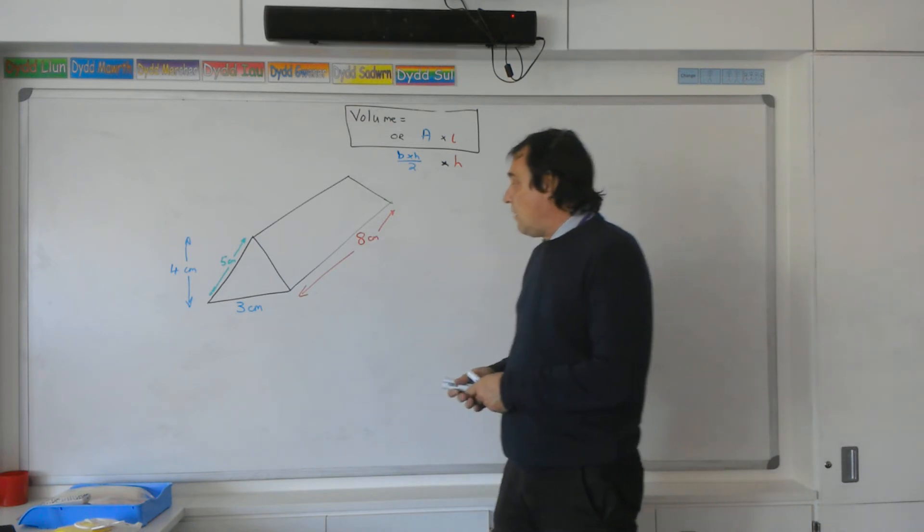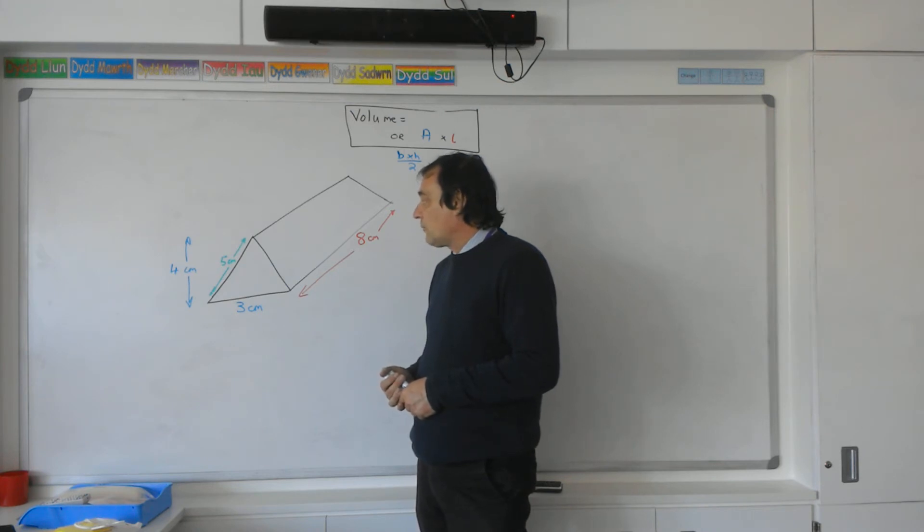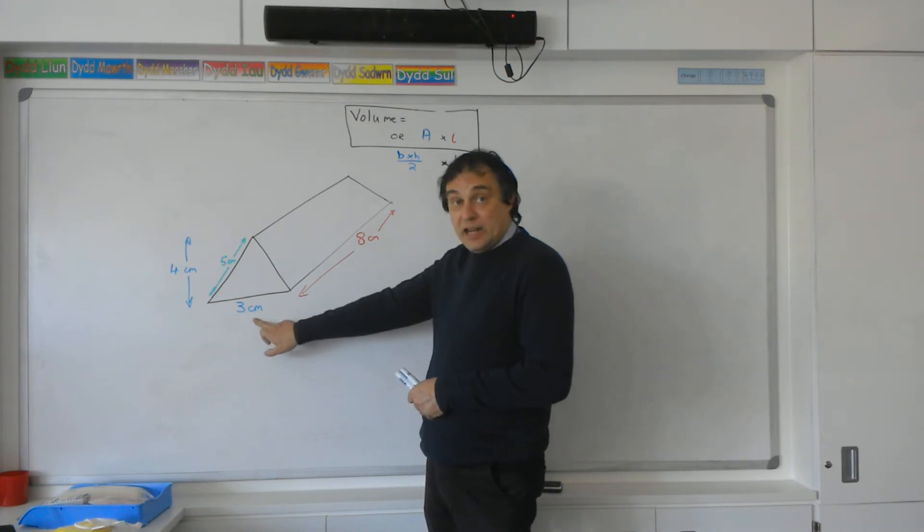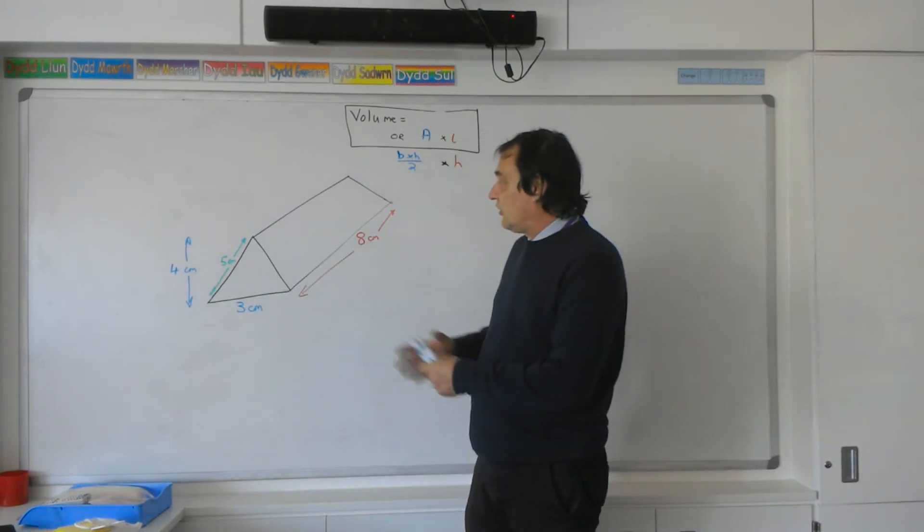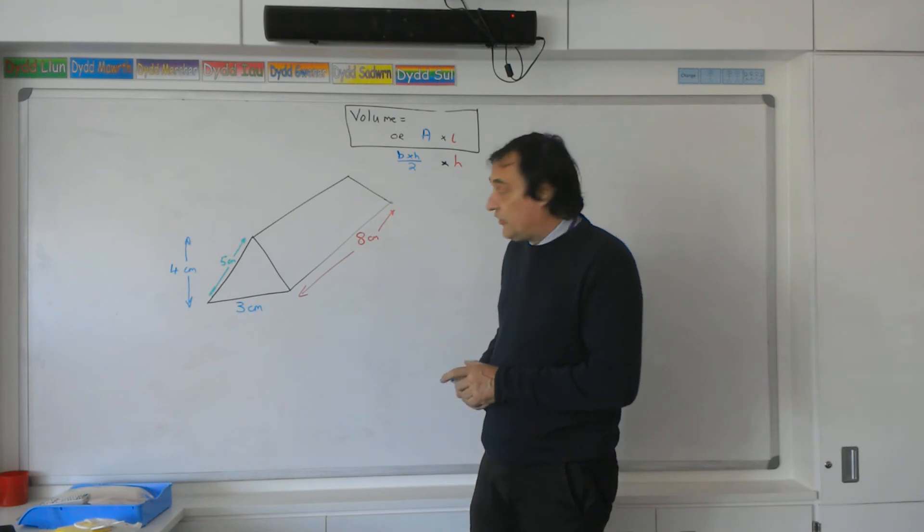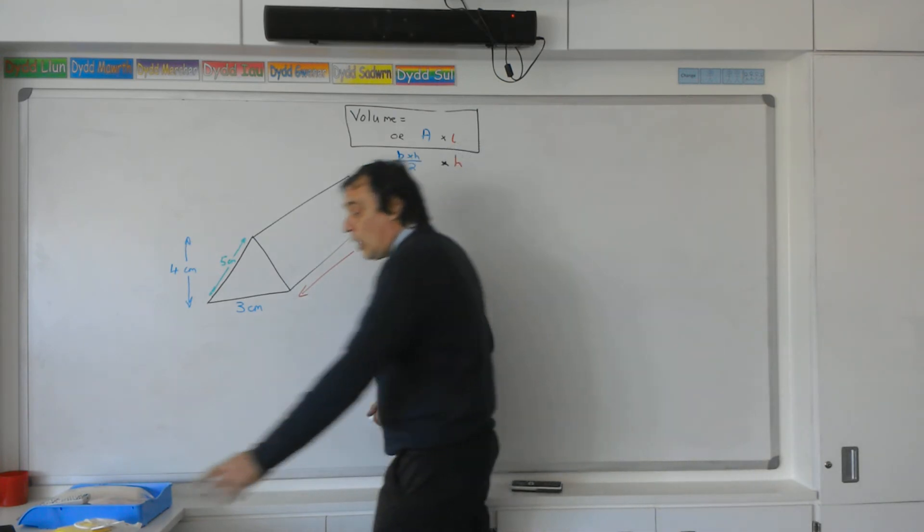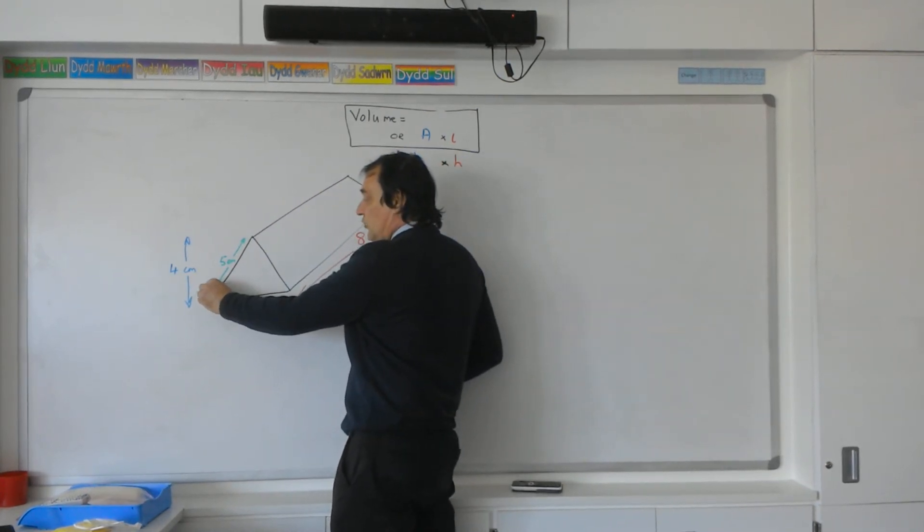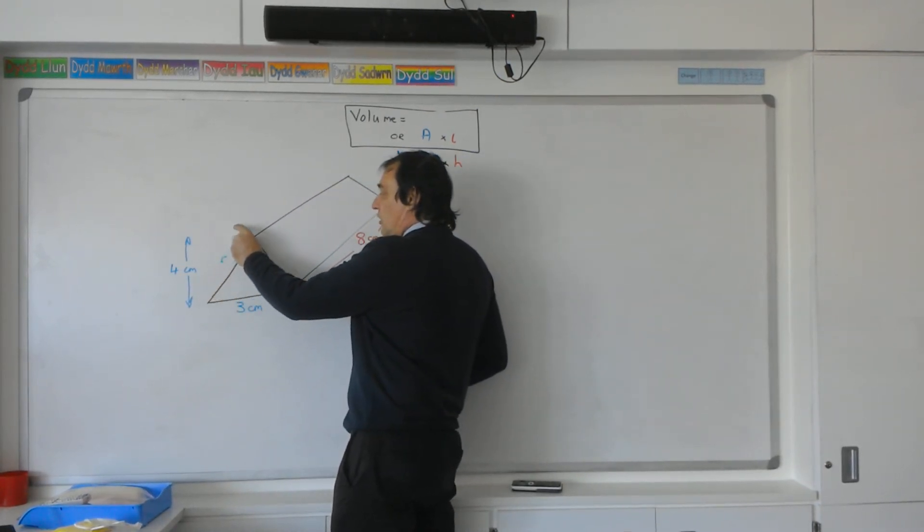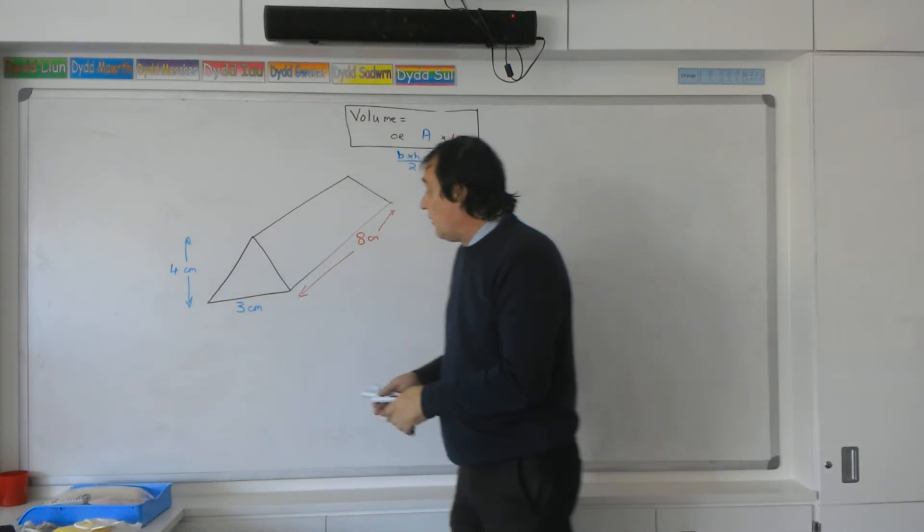The area of a triangle, remember, is half base times height. You times your base and height together, then half your answer. So the base is three and the height is four. Now, this five centimeters here is actually a red herring—sometimes you might see them put there just to confuse you. We can get rid of this five centimeters because it's there to trap you and has nothing to do with the question. Eliminate it.